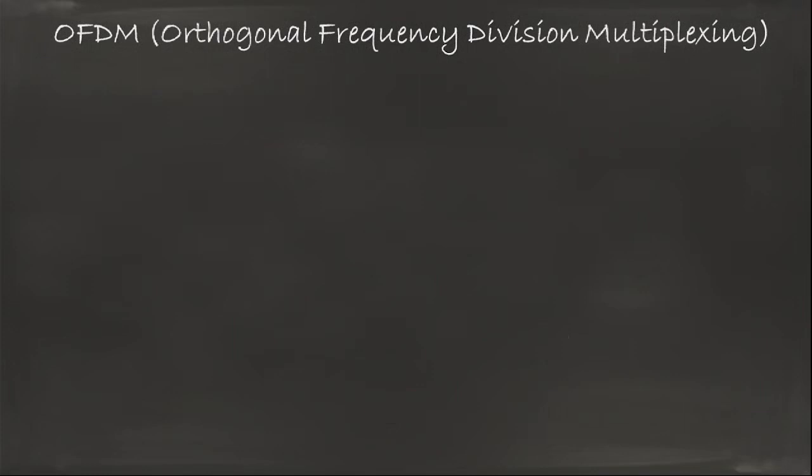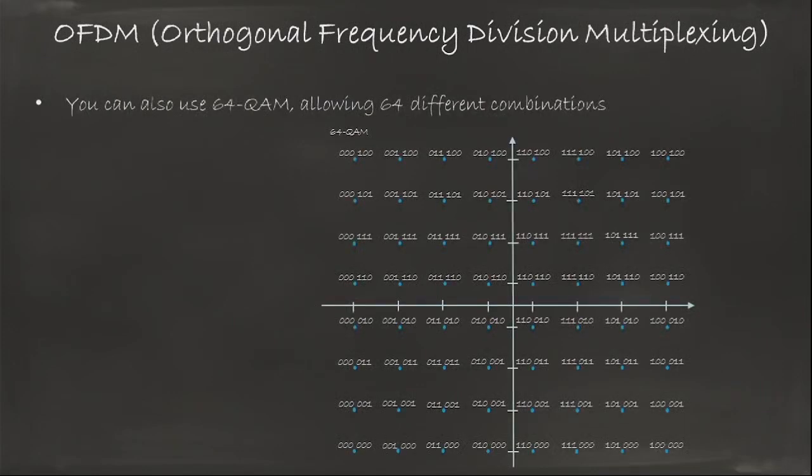There is also another more complex system, which is called 64-QAM. This time, you have 64 different combinations, that allows you to code six bits for each point of the grid. You're going to send your wave, and your wave is going to point to a certain power, a certain angle, and that's going to make that the top of your wave is going to shoot a location where there is a combination of points which is the one that you mean.